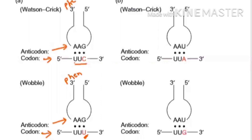We want less than 61 transfer RNAs to code for all 20 amino acids, which are coded by 61 codons. If there are 61 codons for only 20 amino acids, it means one amino acid is coded by more than one codon. For example, phenylalanine can be coded by two types of codons: UUU and UUC. Some amino acids have up to six codons. So if the first two bases are not changing and the change is only at the third position, the same amino acid will still result, helping transfer RNA use fewer molecules for 61 codons.